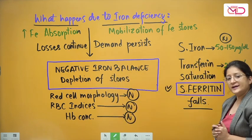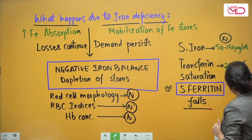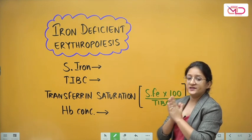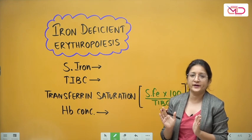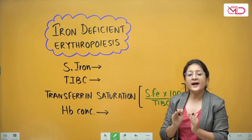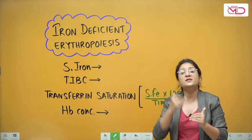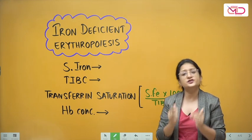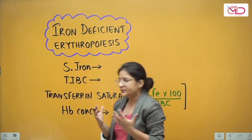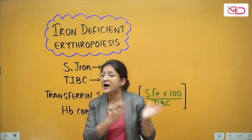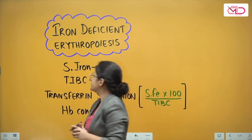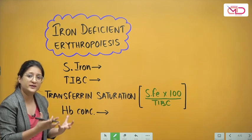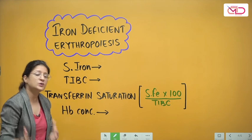If no correction is made, the next stage is iron deficient erythropoiesis. Red blood cell formation continues despite existing iron deficiency because the body needs RBCs and hemoglobin. RBC production continues in an iron-deficient state, the body's capacity to absorb iron is overwhelmed, and whatever iron is in the stores is being continuously used up toward erythropoiesis.